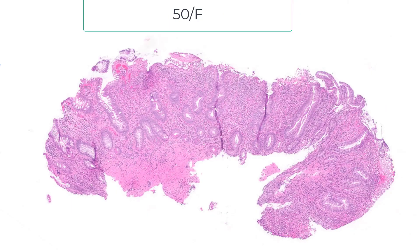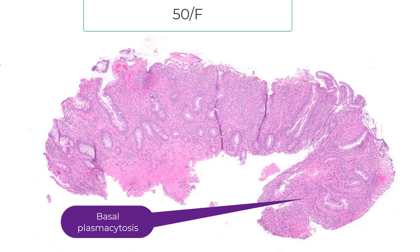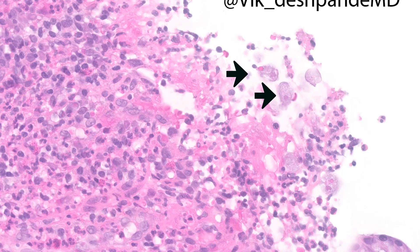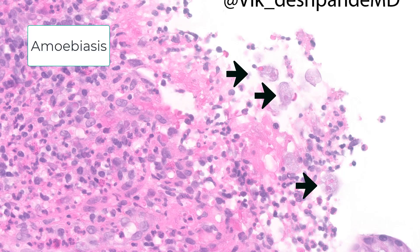Consider a 50-year-old female with diarrhea for at least a month. On low power this does look like chronic colitis — there's some variation in crypt size, expansion of the lamina propria, perhaps some basal plasmacytosis, and there is activity and perhaps an erosion. But look at these organisms: this is amoebiasis. Notice the red blood cells within the cytoplasm. Amoebiasis is a very close mimic of inflammatory bowel disease, so look for the organisms within that exudate.